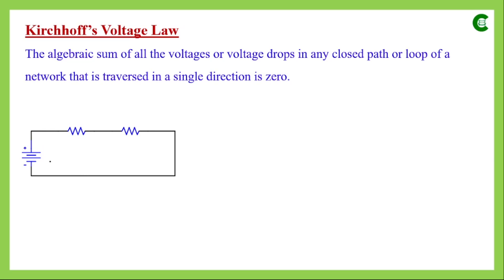This is a simple network where we have a voltage source of value V and two resistors with resistance values R1 and R2, connected in series. Suppose a current I flows through that circuit. Now, suppose if we start traversing from a point and move in the clockwise direction — since we have a single voltage source, we know the current comes out from its positive terminal, so that will be the current direction in this circuit.